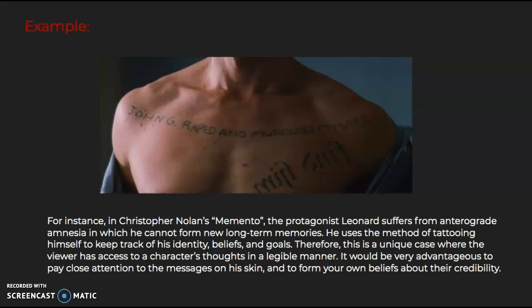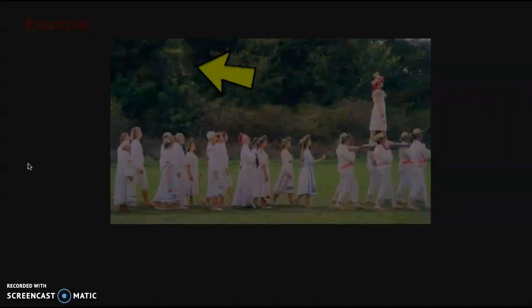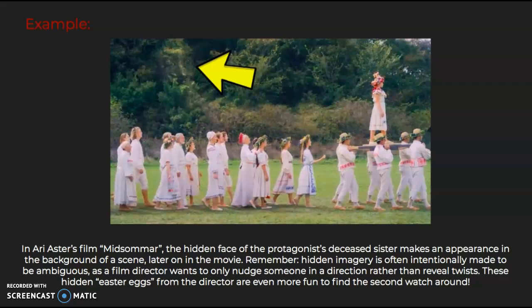Next, on to tip two: to keep an eye out for hidden imagery. In Ari Aster's film Midsommar, the hidden face of the protagonist's deceased sister makes an appearance in the background of a scene later on in the movie. Remember, hidden imagery is often intentionally made to be ambiguous, as a film director only wants to nudge someone in the direction rather than reveal twists. These hidden easter eggs from the director are even more fun to find the second watch around.